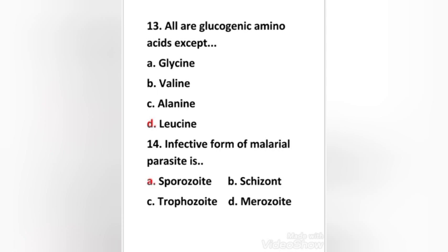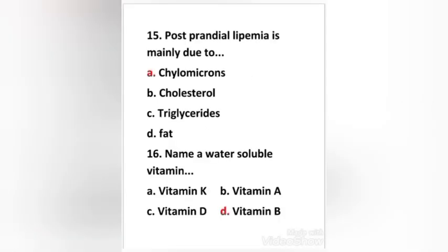Next question: the infective form of the malarial parasite is — sporozoite, schizont, trophozoite, or merozoite? The right answer is option A — the infective form of the malarial parasite is the sporozoite. When a female Anopheles mosquito bites an infected person, Plasmodium enters the mosquito's body and undergoes further development. The parasites multiply to form sporozoites that are stored in the salivary glands.